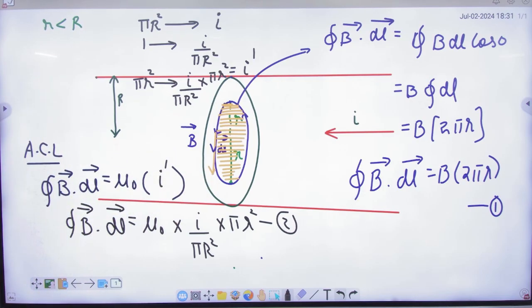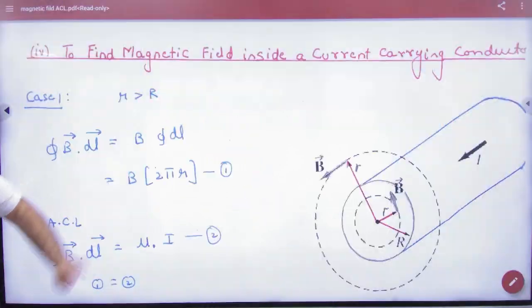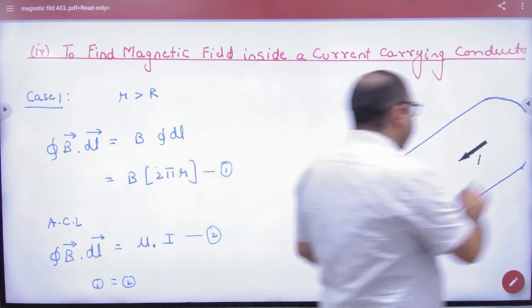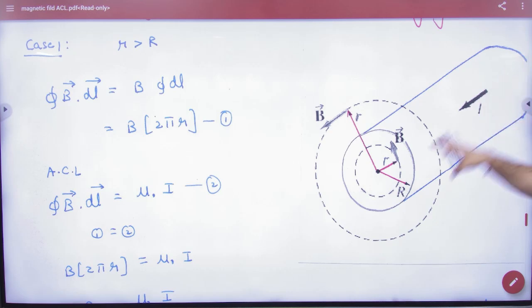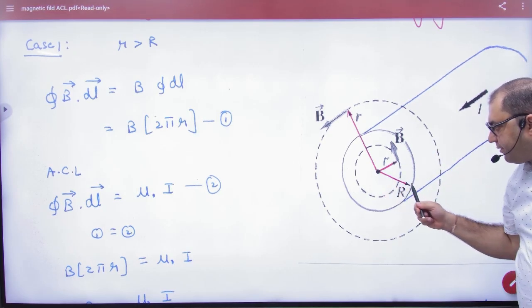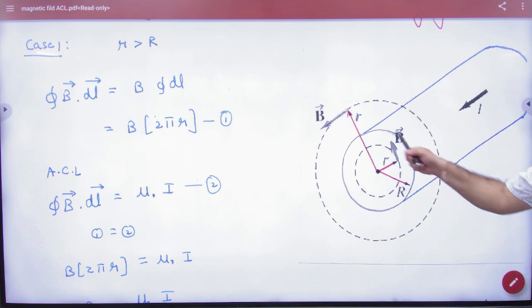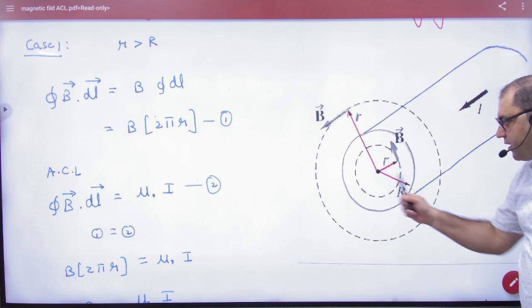The value of i' is (I/πR²) × πr², equation number 2. From equation 1, B·dl; from equation 2, B·dl. Both equate to calculate the value of B. Now how to do this? You will get more understanding from here. You have a blue colored actual wire, then understand that one. This is a blue colored wire, carrying current I.